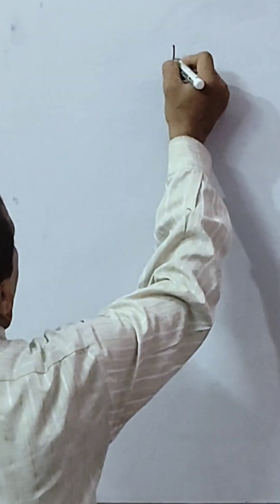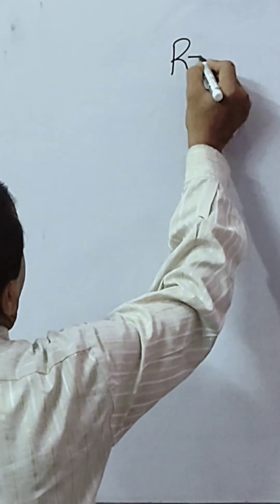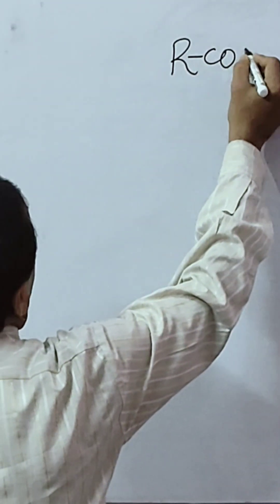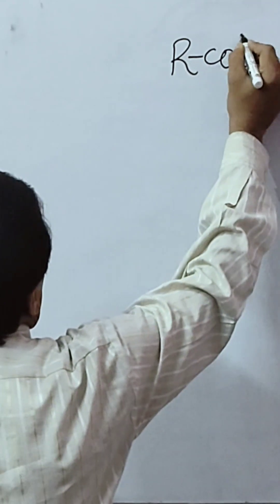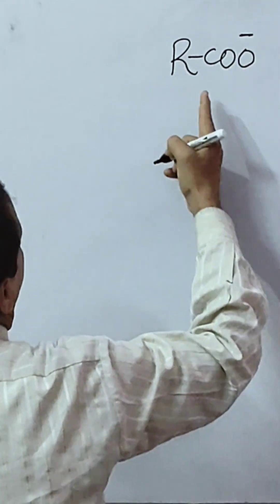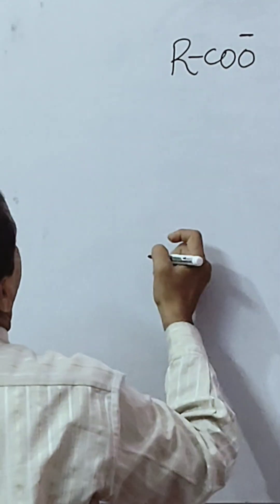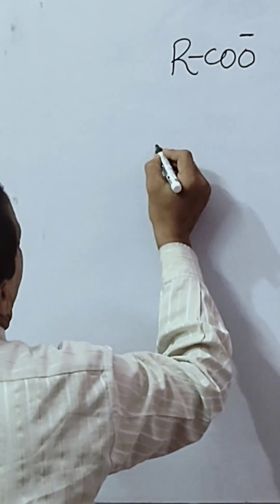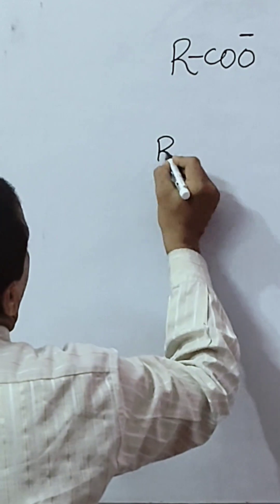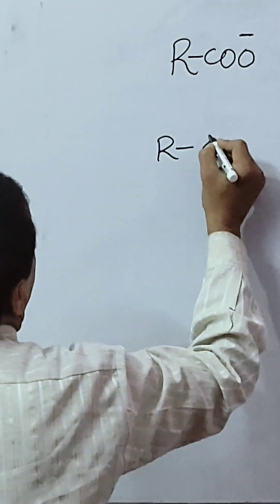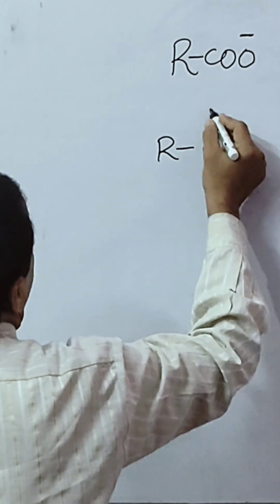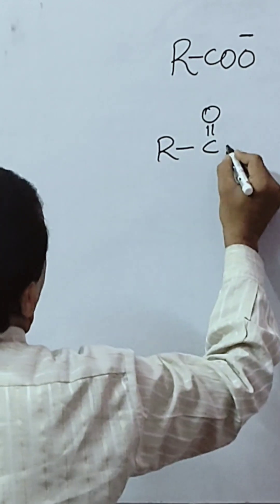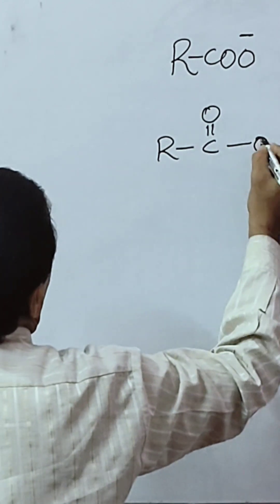In this video I will draw resonating structures of carboxylate ion. Resonance is a phenomenon in which we can draw more than one structure for certain compounds to explain all the properties of those compounds.